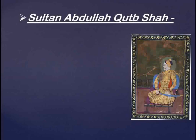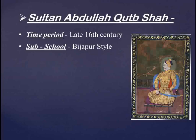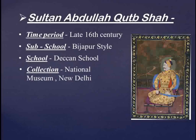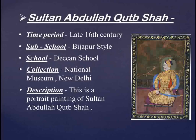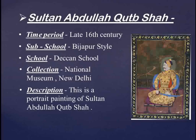The next painting is Sultan Abdullah Qutb Shah. This is a portrait painting of Abdullah Qutb Shah, who is the famous ruler of the Golconda region. The time period is the late 16th century. The sub-school is Bijapur style — though he was the ruler of Golconda, this painting is related to the Bijapur style. The school is Deccan school, and the collection is at the National Museum, New Delhi. In this painting, Sultan Abdullah Qutb Shah is sitting on a throne in a terrace garden.